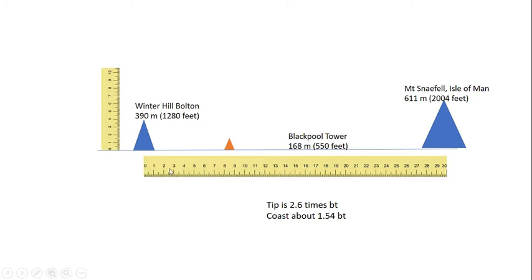The main point is this. If we scale all the different items, Winter Hill, Mount Snaefell, and Blackpool Tower, to the proper scale, and we plot them into a flat Earth, the horizontal scale and the vertical scale.